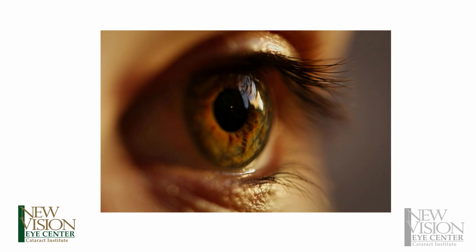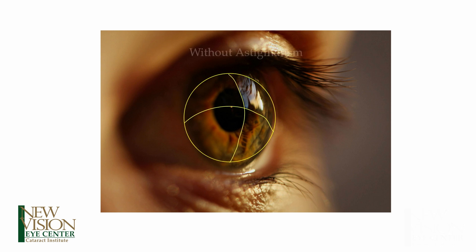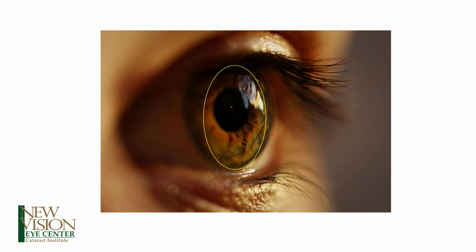Looking at this photo of a real eye, somebody without any astigmatism at all would have a perfectly round cornea. In this situation, the curvature in one direction is the same as the curvature in all other directions. Somebody with astigmatism, however, would have a relatively oval-shaped cornea.